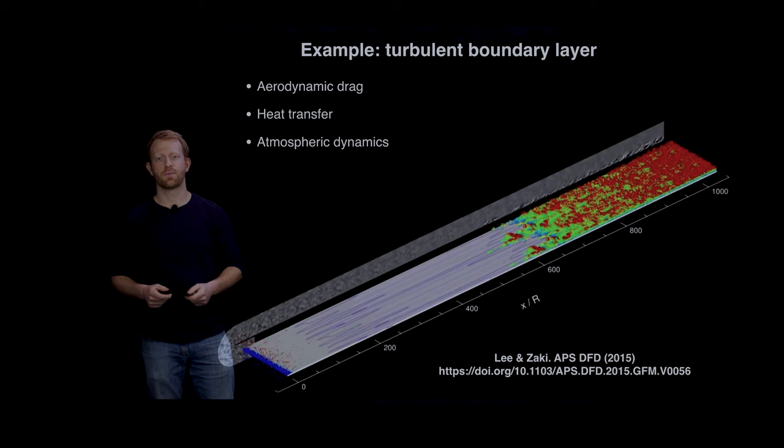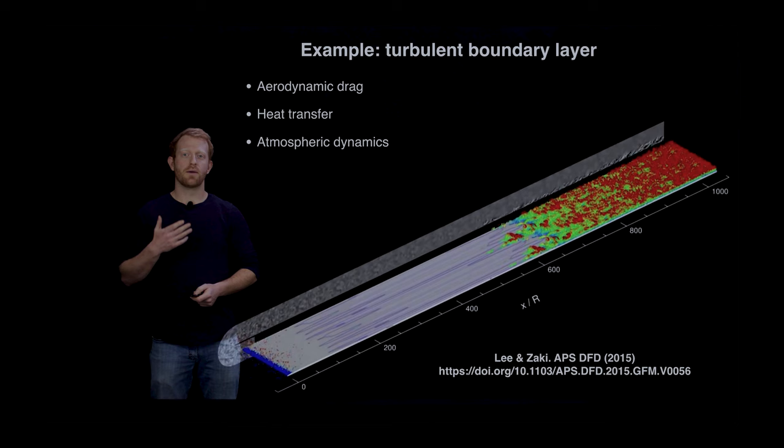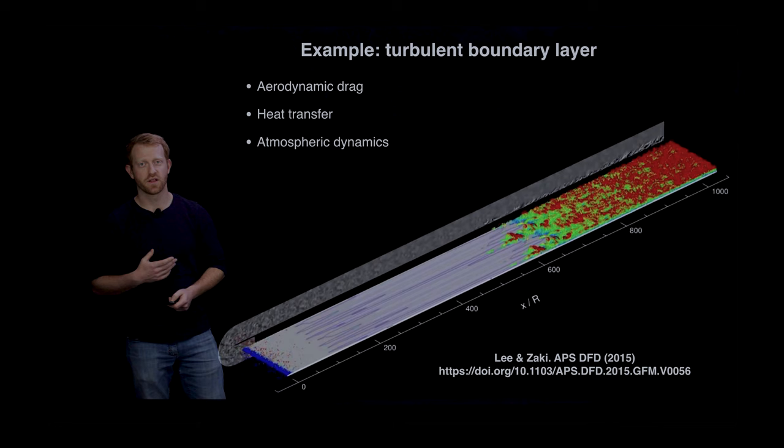What I'm showing here is a video of a boundary layer in transition to turbulence from the Johns Hopkins turbulence database, and this is also the data set that we use in the paper.